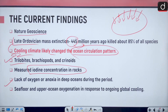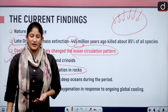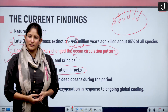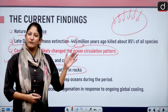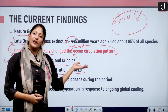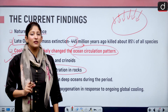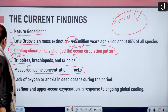Seafloor and upper ocean oxygenation changed in response to ongoing global cooling. As it was earlier thought that only global warming can lead to any kind of mass extinction, global cooling has now also been established as one of the reasons.